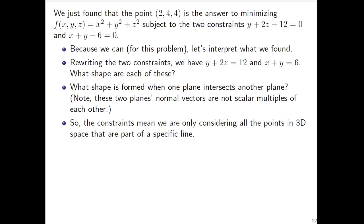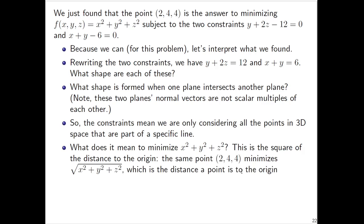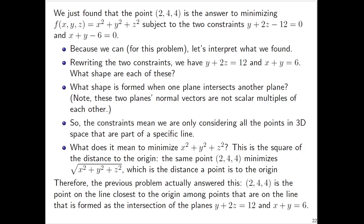We only want to look at points on this line that is formed as the intersection of two planes. And on that line we were trying to minimize x² + y² + z². What does it mean to minimize this? This is the square of the distance between the point (x,y,z) and the point (0,0,0). But remember, minimizing the square of a distance is really the same work as minimizing the distance itself. So the point (2,4,4) minimizes the root of x² + y² + z². That's the distance.